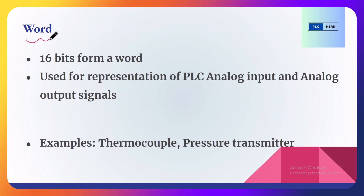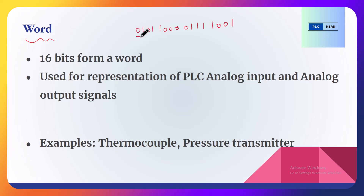Word is another data type used in PLC programming. 16 bits constitute a word. For example, 1 0 0 1 1 1 1 0 0 0 1 1 0 1 0 — here we have 16 bits and this is one word. Normally in PLCs, the analog input and analog output signals are represented in the form of words.